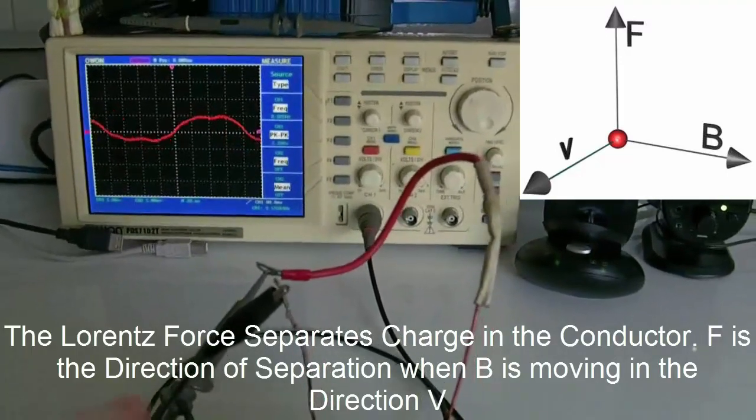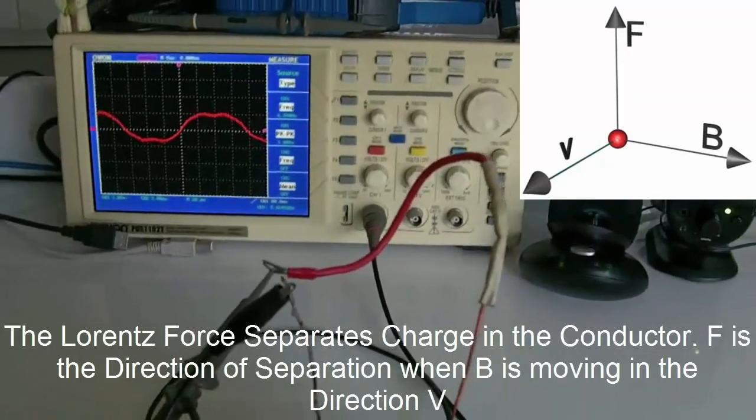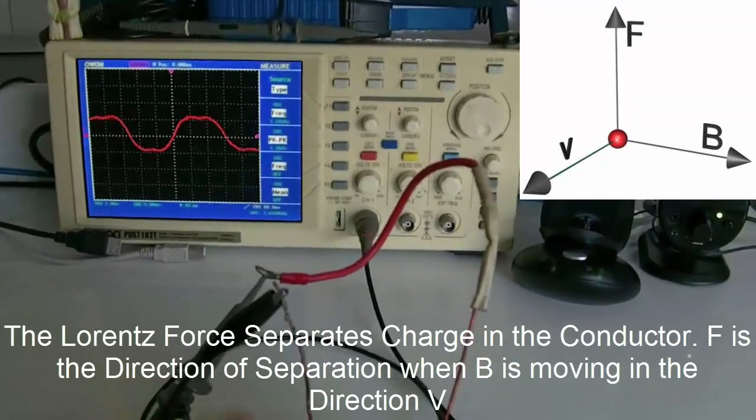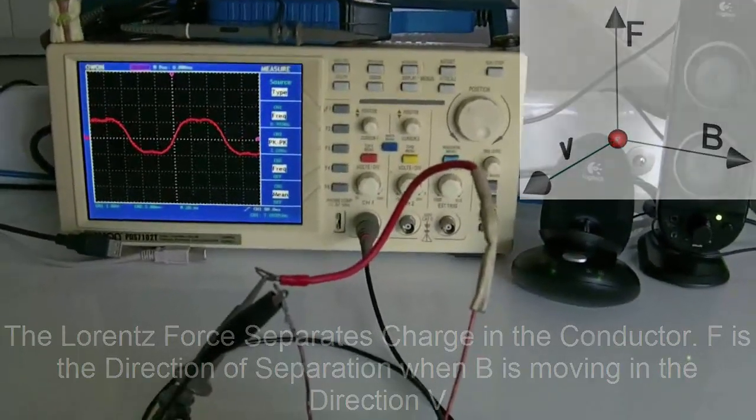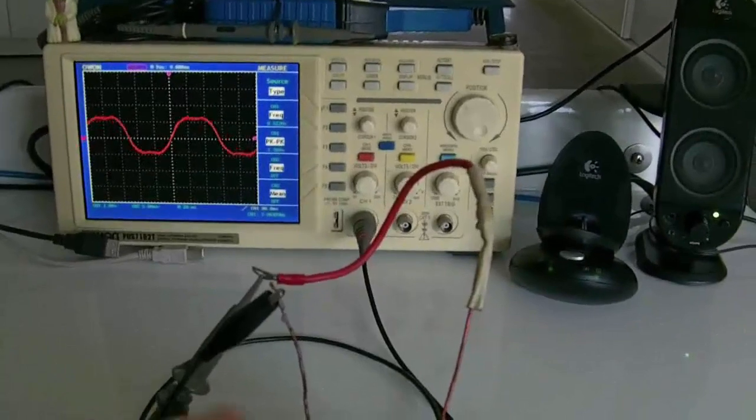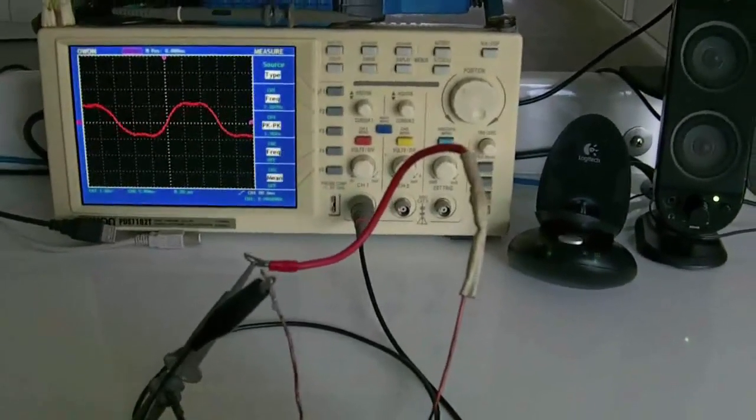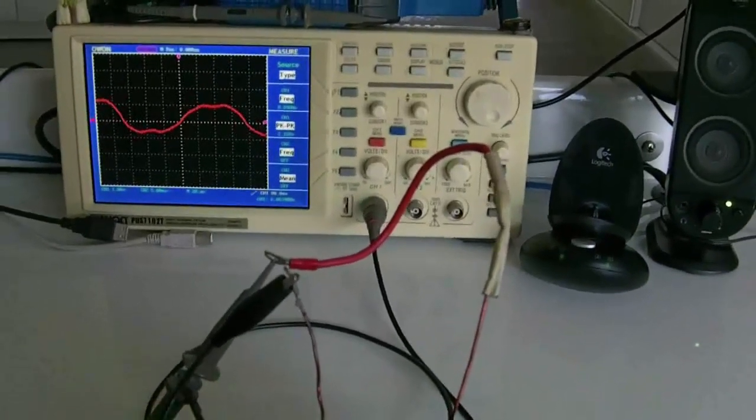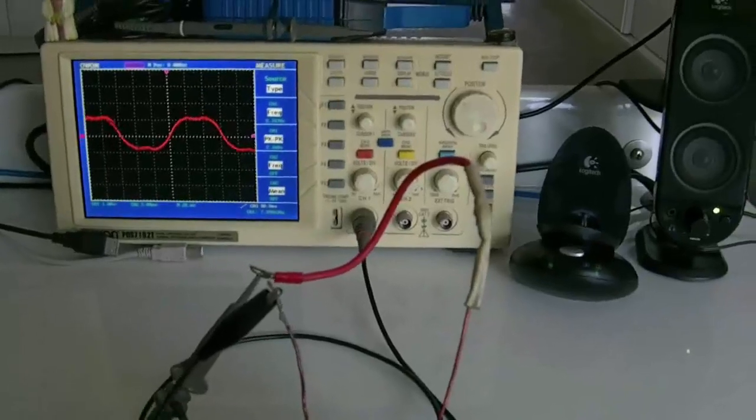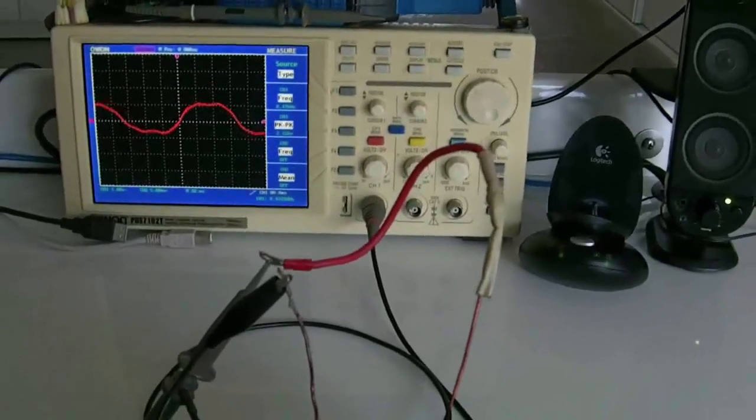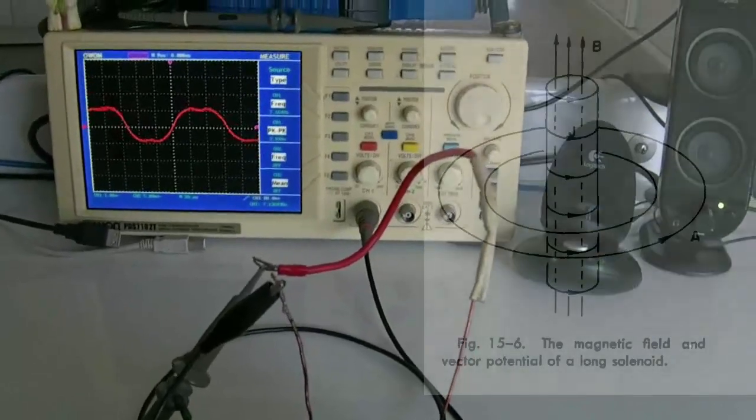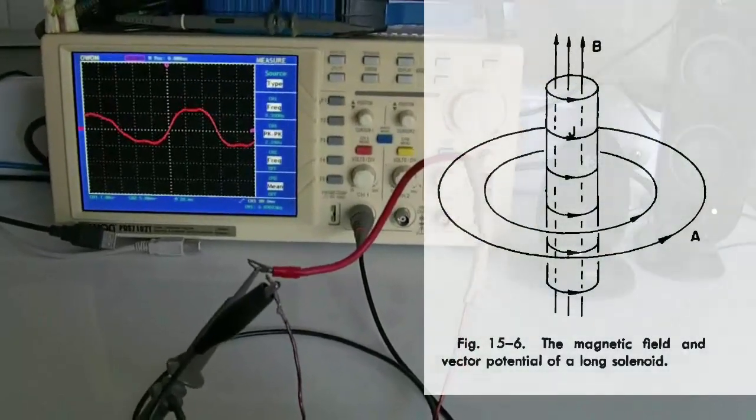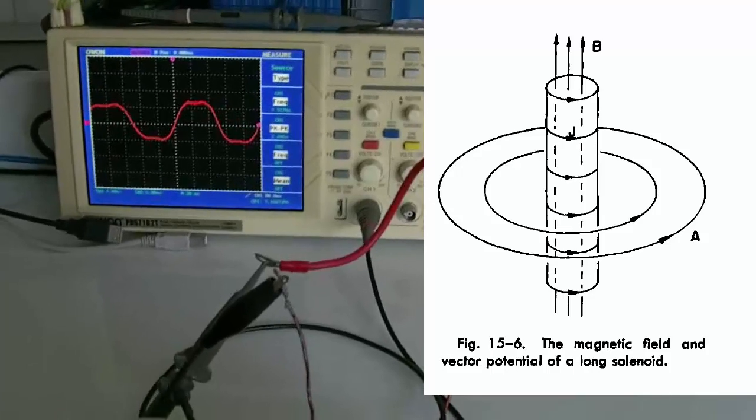So the magnetic field changing in time, cutting a conductor in the right configuration is one form of EMF, dphi/dt, which is typically what you see in a transformer. It's a different form of induction, and that's the time rate of change of a magnetic field, which is linked to the magnetic vector potential, the magnetic A vector potential.